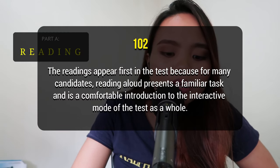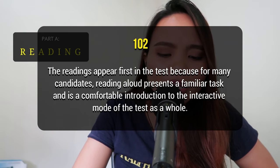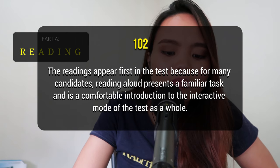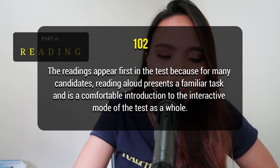The only tip I can give you for Part A is to make sure that you pause in the places where you're supposed to pause, like commas, and try to group sentences into phrases — that's basically how you read them. This is going to be super easy. The difficulty of Part A is 1 out of 5. The Versant website says readings appear first because for many candidates, reading aloud presents a familiar task and a comfortable introduction to the interactive mode of the test as a whole. They put Part A first to warm you up, so you don't have to worry about this part.